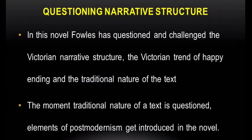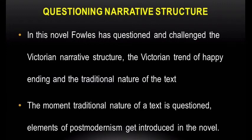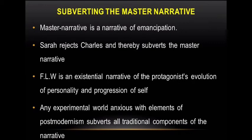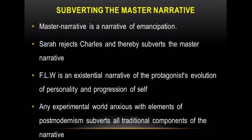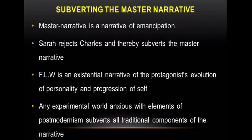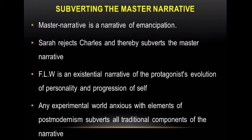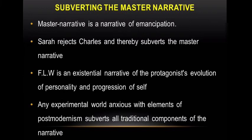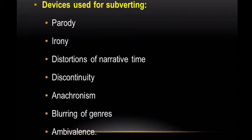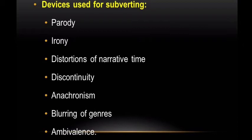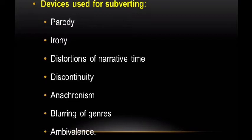The moment the traditional nature of a text is questioned, elements of postmodernism get introduced. Postmodernism in fiction subverts the master narrative — a narrative of emancipation. In The French Lieutenant's Woman, had Sarah accepted Charles, the novel might have been a master narrative, but Sarah rejected Charles. Consequently it became an existential narrative of the protagonist's evolution of personality and progression of self. The experimental devices used to achieve subversion include: parody, irony, distortions of narrative time, discontinuity, anachronism, blurring of genres, and ambivalence.